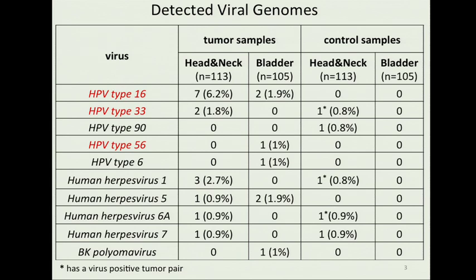So why do we search for viruses? It's a well-known fact that viral infection is one of the important risk factors for different cancer types. A significant proportion of head and neck carcinomas are caused by human papilloma virus. As for bladder cancer, results are somehow controversial, but several previous studies reported moderate association between bladder cancer and HPV and some polyoma viruses. We performed analysis of whole genome sequencing data for 113 head and neck tumor and control pairs and 105 bladder cancer and control pairs.